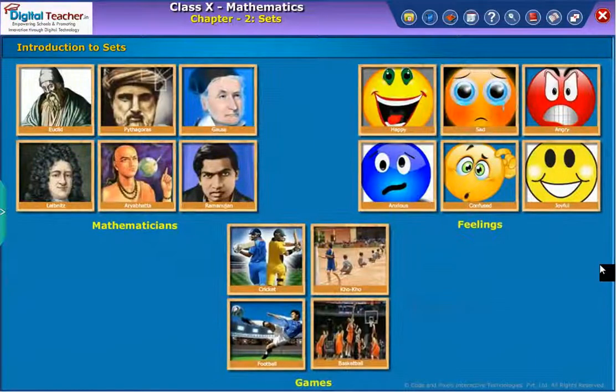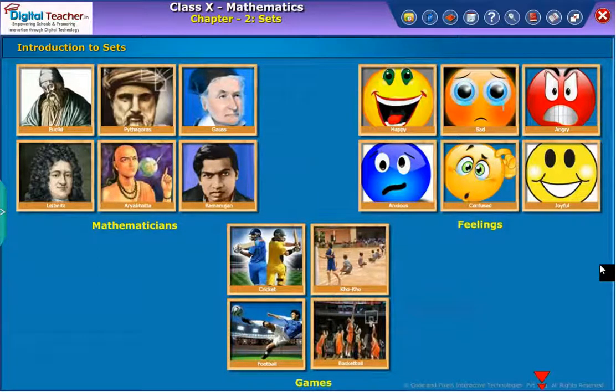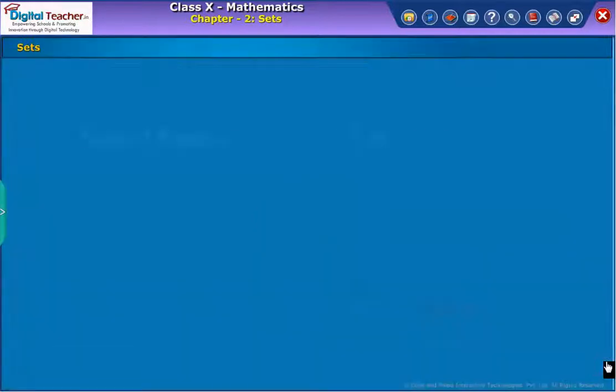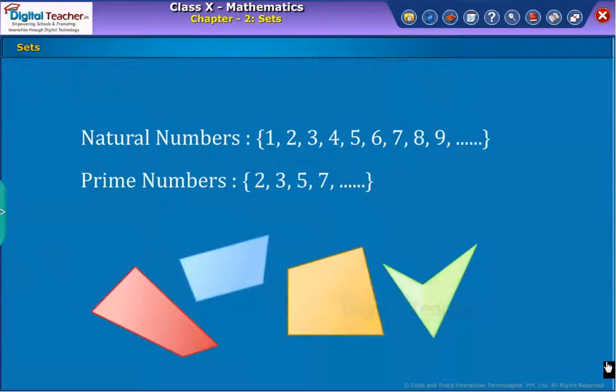We know that when things are grouped based on a criteria, they form a set. We come across some sets of collections in mathematics also like natural numbers, prime numbers, quadrilaterals in a plane, et cetera.